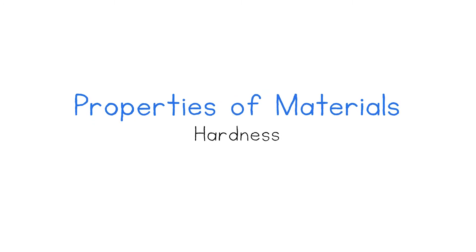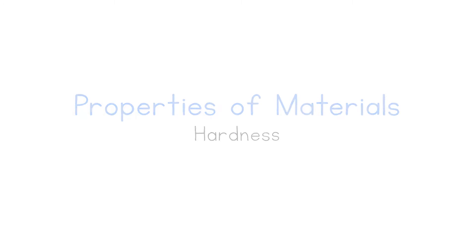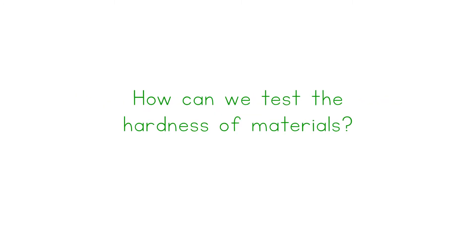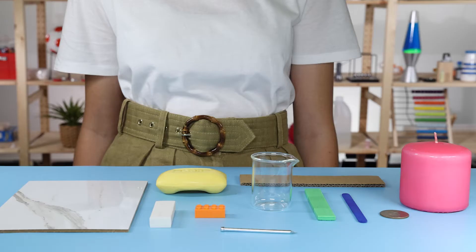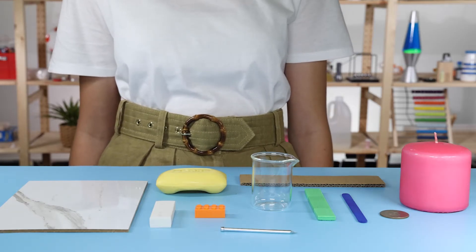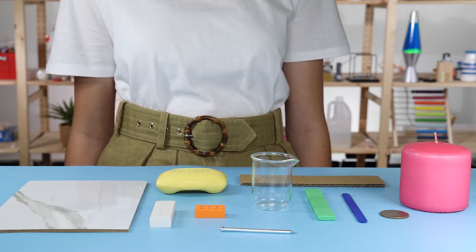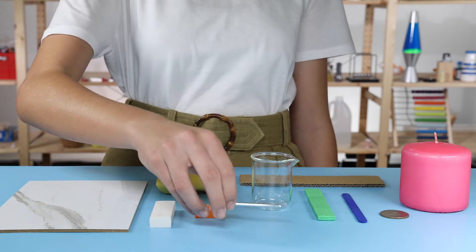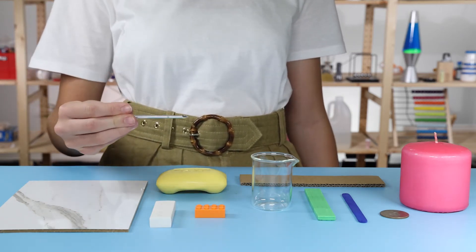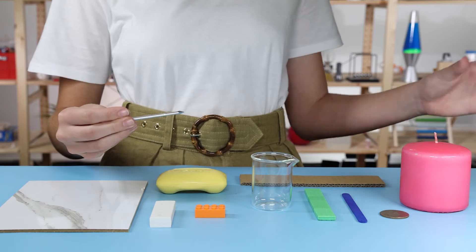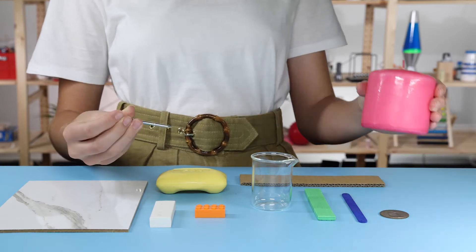Properties of materials: hardness. One way to test the hardness of materials is to see how easily it can be scratched by a nail. Let's use a nail to test the hardness of these materials.